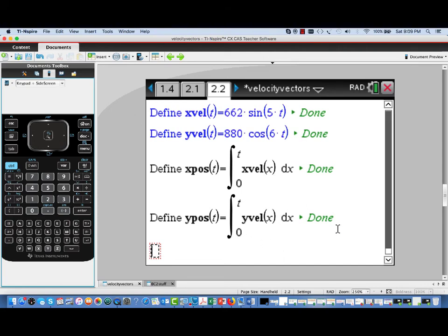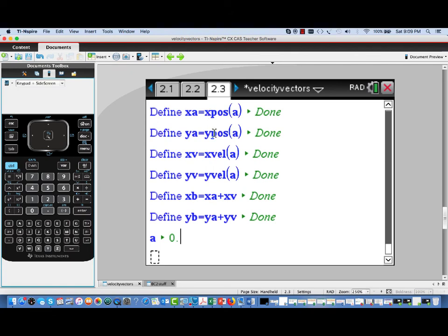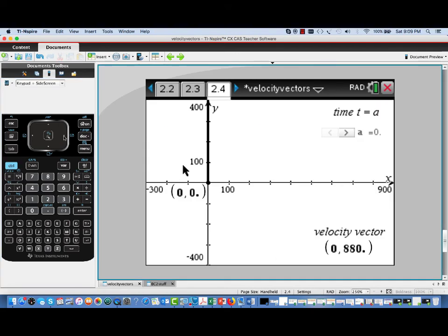All right. Now I've set up a graph page similar to the one that we had before, and we've defined all of our components for our velocity vector in the same way. But let's see if it works.